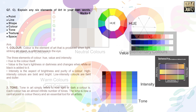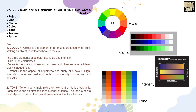In question 7C, you have to explain any six elements of art in your own words — that is: point, line, shape, color, tone, texture, and space.